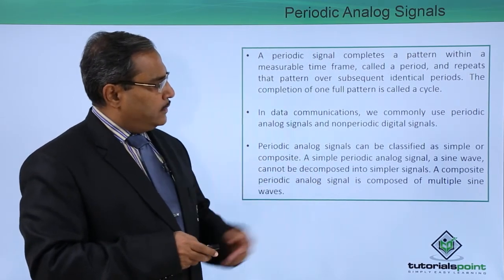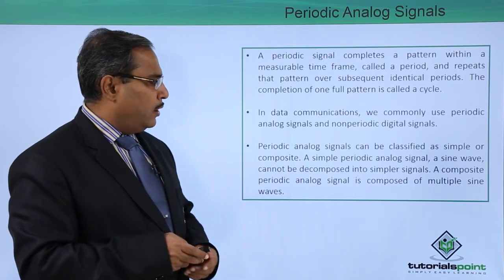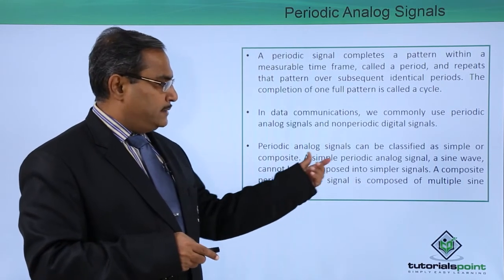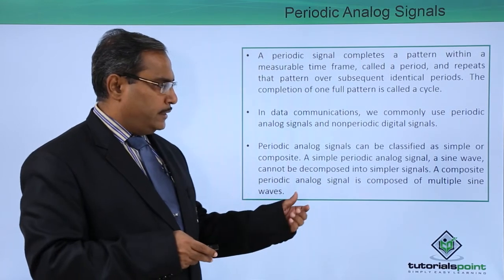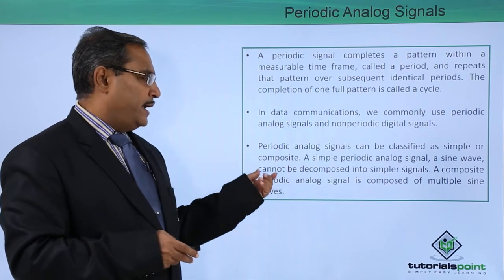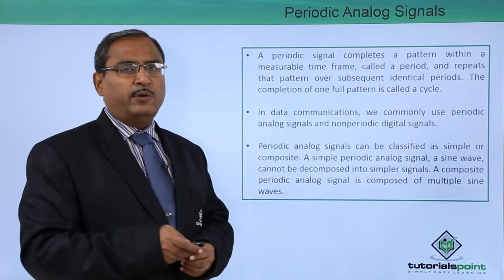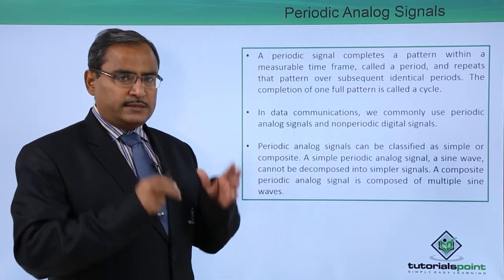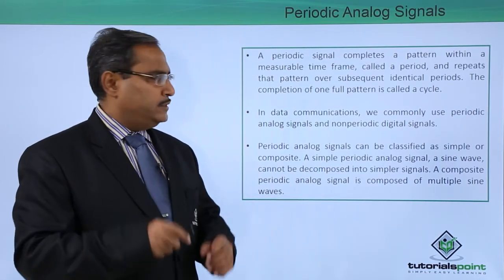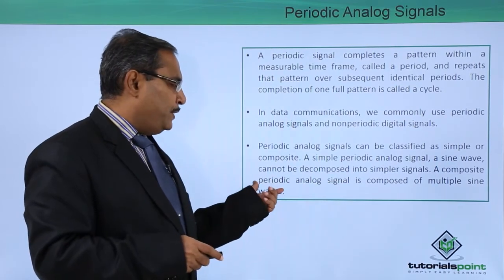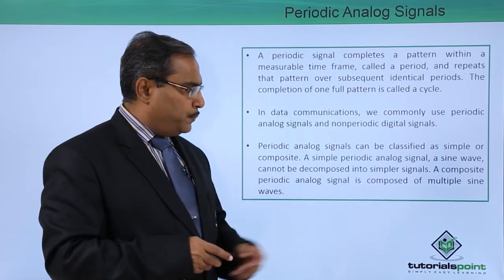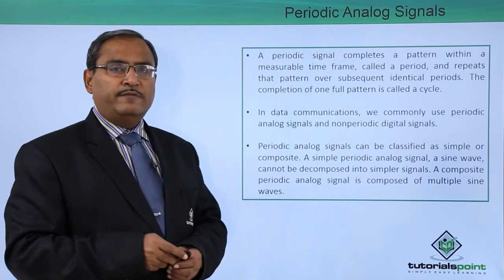Periodic analog signals can be classified as simple or composite. A simple periodic analog signal, a sine wave, cannot be decomposed into simpler signals. A composite periodic analog signal is composed of multiple different sine waves.